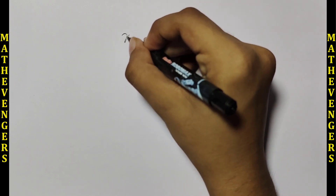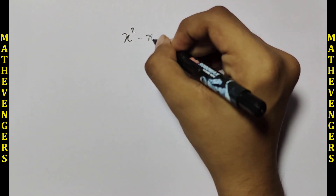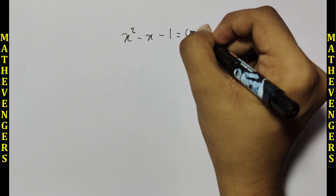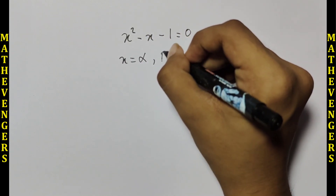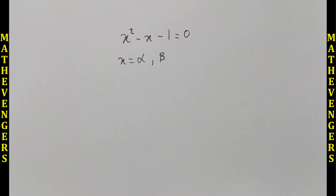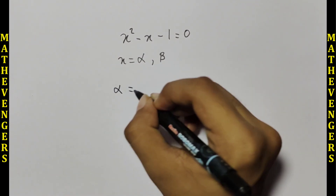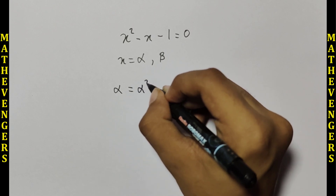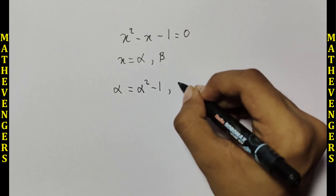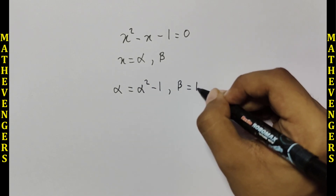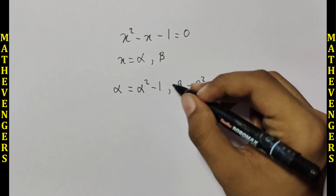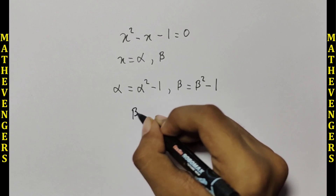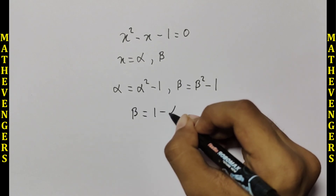Let's start. Let the roots of the equation x² - x - 1 = 0 be alpha and beta. From here, we will get alpha = alpha² - 1 and beta = beta² - 1. From these two identities, we will also get beta = 1 minus alpha.